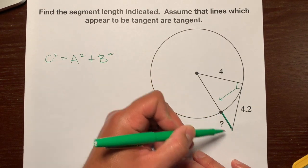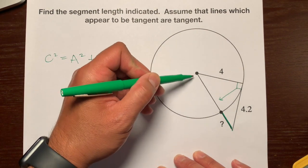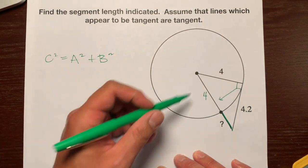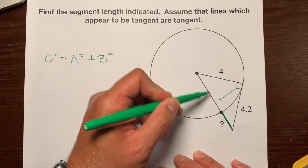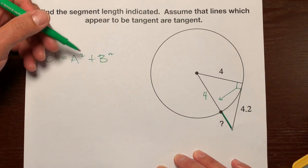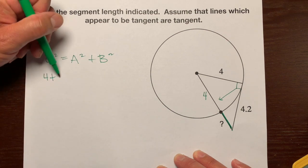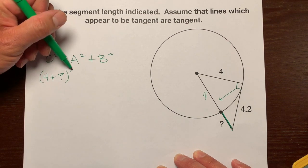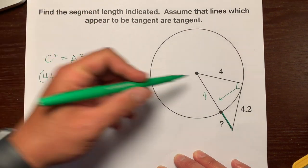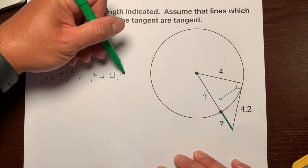But what's the length of this right here? Do we have any information about this whole thing right here? Yeah, so the length from here to here is 4 because that's the radius. So the length of this, our information about c is 4 plus question mark. So the hypotenuse that we have is 4 plus question mark squared. So this is our c right here.